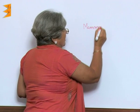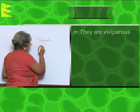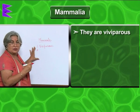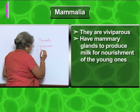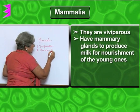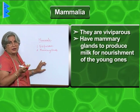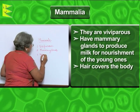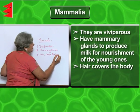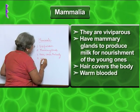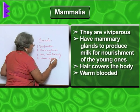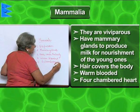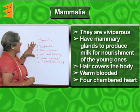The most important feature about mammals is that they are viviparous — not only do they give birth to young ones, they also have mammary glands which produce a milk-like fluid for the nourishment of the young one. They have hair covering the body, they are warm-blooded, and the heart is four-chambered. These are the main features of mammals.